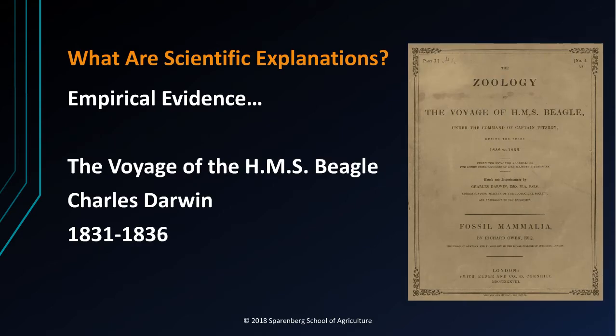The Voyage of the Beagle is the scientific journal written by Charles Darwin and published in 1839. The Beagle sailed from Plymouth Sound on December 27, 1831. The expedition was originally planned to last two years, but it lasted almost five. The book is a vivid and exciting travel memoir as well as a detailed scientific field journal covering biology, geology, and anthropology that demonstrates Darwin's keen powers of observation. I read the book while I was in high school. It was not an assignment. I was passionate about learning more science, and Darwin's writing style was exciting.